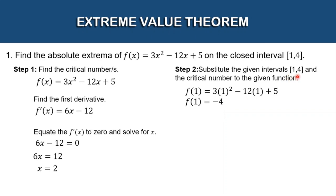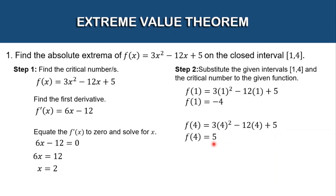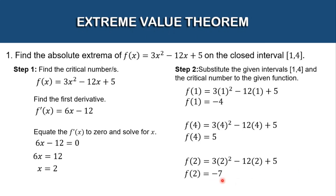For our second value, let's substitute x = 4. We have f(4): 3(4²) − 12(4) + 5. Simplifying, the answer is 5. And for the third one, the critical value x = 2: f(2) = 3(2²) − 12(2) + 5. Simplifying, the answer is −7.